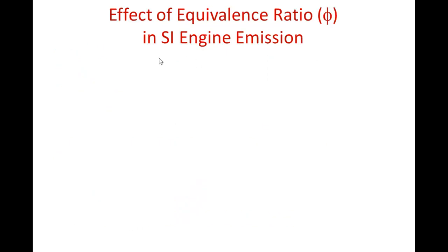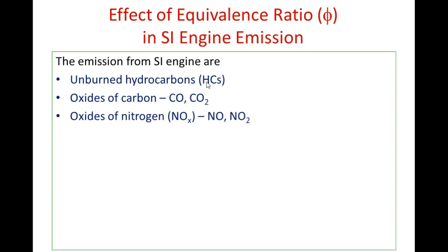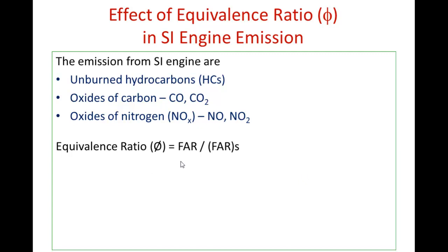Coming to the effect of equivalence ratio on SI engine emissions, refer to the diagram. The three major emissions from the SI engine are unburned hydrocarbon, oxides of carbon, and oxides of nitrogen — predominantly NO and NO2 in the exhaust gas. Equivalence ratio, denoted by phi, is the ratio of the actual fuel-air ratio divided by the fuel-air ratio at stoichiometric condition. If phi is greater than 1, the mixture is rich; if phi is less than 1, it is a lean mixture.